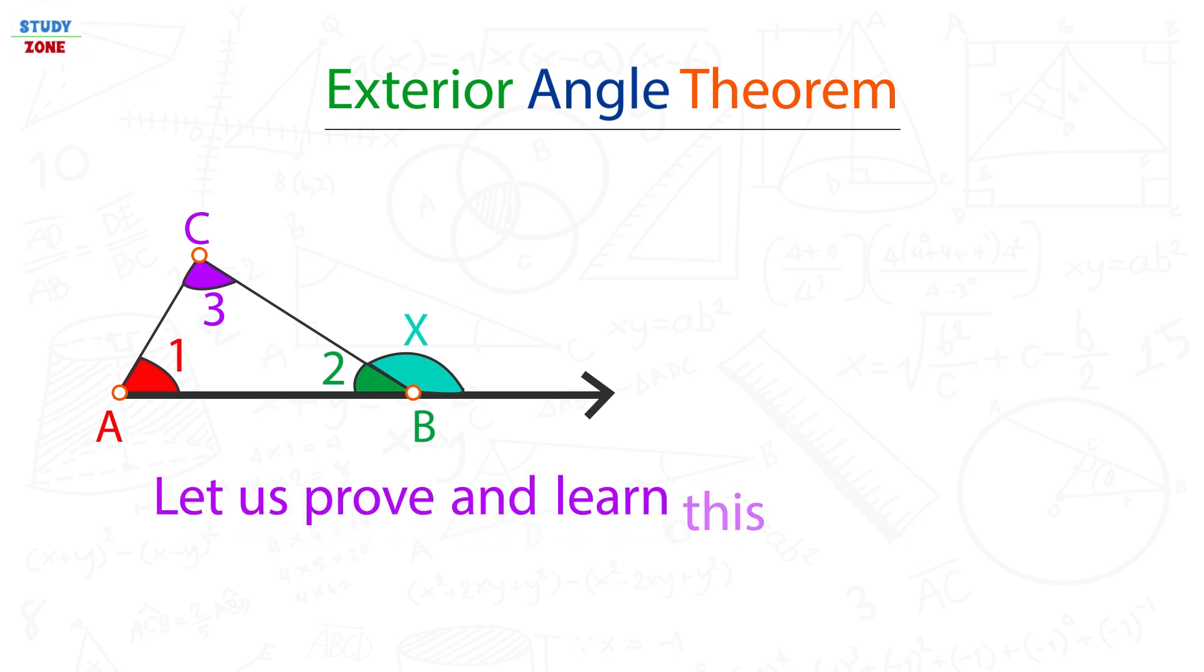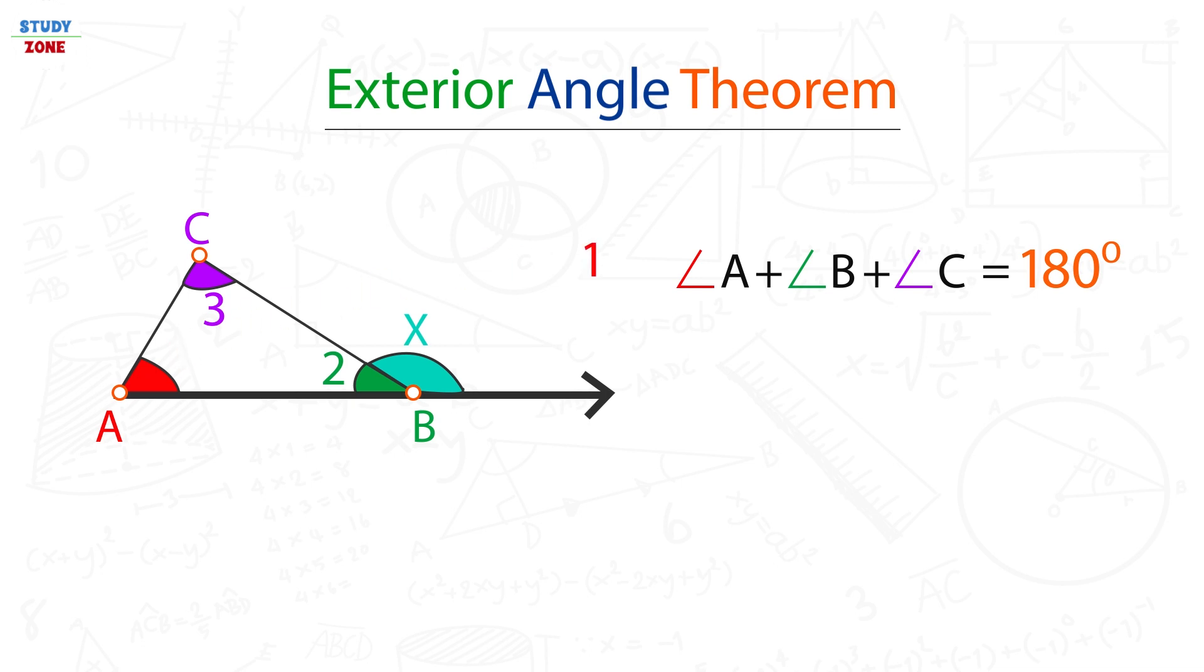Let us prove and learn this very quickly. As we know that the sum of interior angles of a triangle is always 180 degrees. Hence we can say that angle 1 plus angle 2 plus angle 3 is equal to 180 degrees. If you want to see its proof, then click the link displayed on the top right corner of this video.